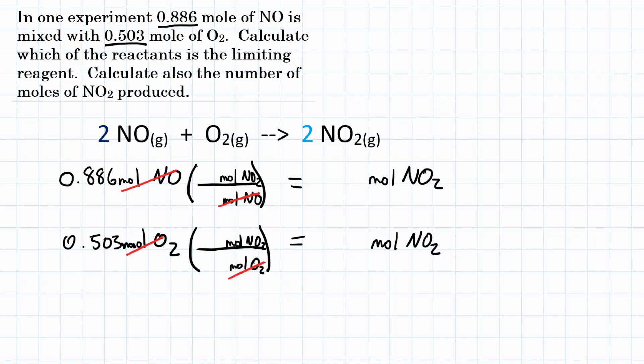And to do this, we only need the coefficients. So for the coefficient of NO, that would be 2. I got that from the coefficient in front of NO. And then our coefficient for NO2 is also 2. That came from here. So that is how we will solve the first one.